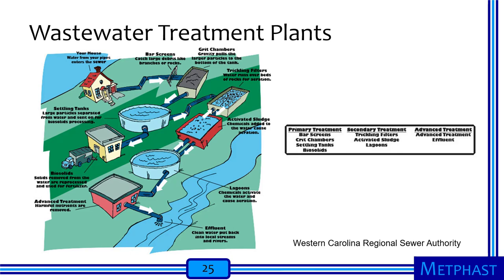Trickling filters are followed by activated sludge tanks that further break down human waste, and storage lagoons where chemicals activate the water and aeration continues. Then the water moves on for more advanced tertiary treatment — removal of nitrogen and phosphorus nutrients that can cause excessive growth in surface waters. That final treatment is provided chemically, and then the effluent is released back into surface waters most often.